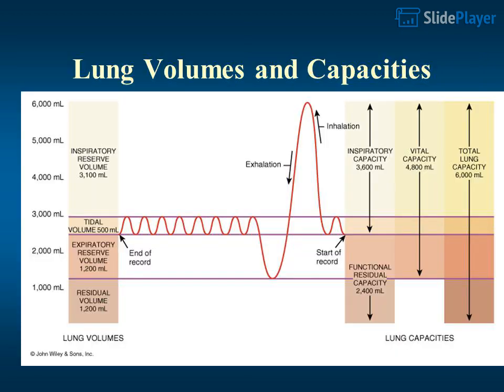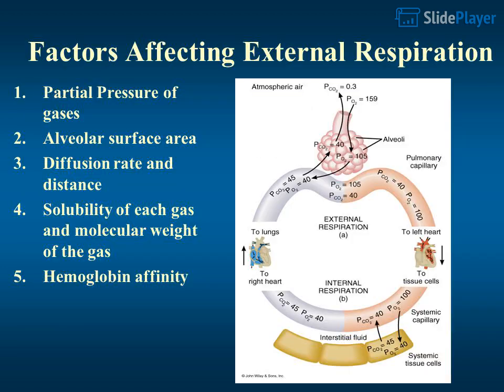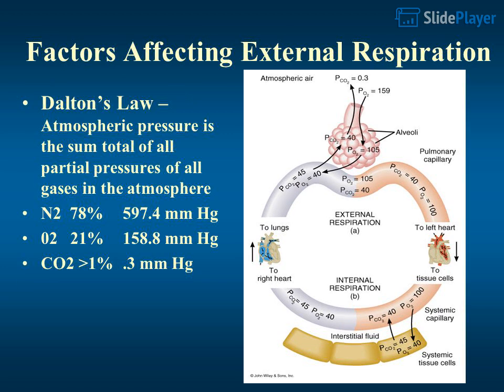Lung volumes and capacities are an important measurement topic. Factors affecting external respiration include the partial pressure of gases, alveolar surface area, diffusion rate and distance, solubility of each gas, molecular weight of the gas, and hemoglobin affinity.